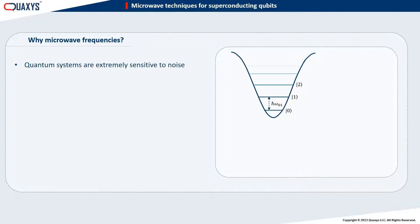These quantum circuits are extremely sensitive to noise. Since a large part of the noise is proportional to temperature, we put those circuits in a cold environment called a dilution fridge.